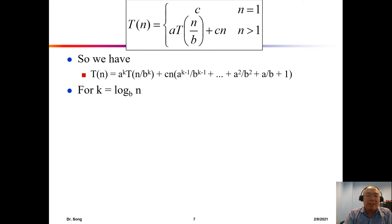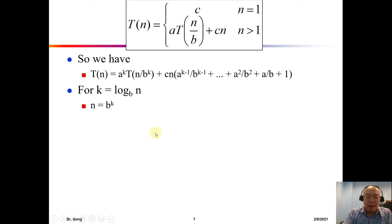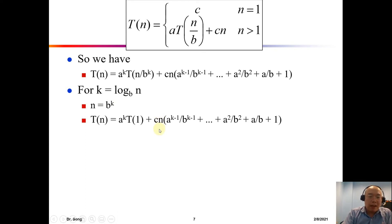Where do we stop? We stop when the problem size becomes one. At that point, k = log_b(n), which also means n = b^k. We can substitute n with b^k, and this is what we have.